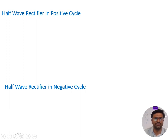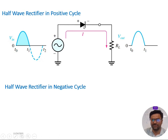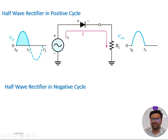During the positive cycle, from t0 to t1, the AC sinusoidal signal is applied to the half wave rectifier. During this time the diode goes into forward bias. For an ideal diode, it goes forward bias after zero volts; for a practical diode, it requires a minimum barrier potential voltage. During forward bias, current flows through the diode and through RL to ground, so from t0 to t1 you get the output voltage.